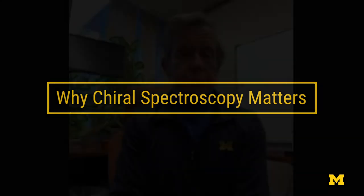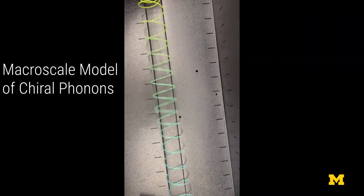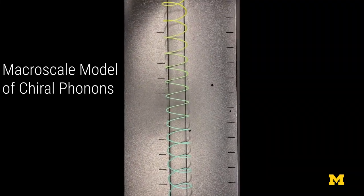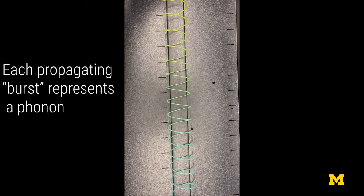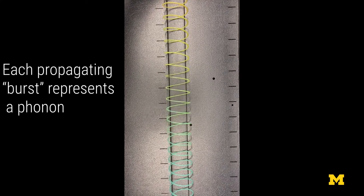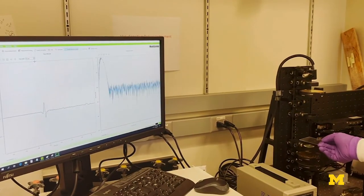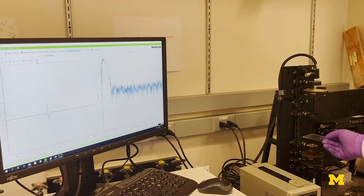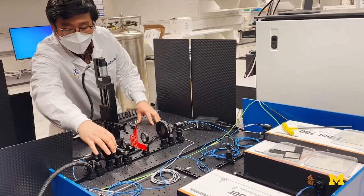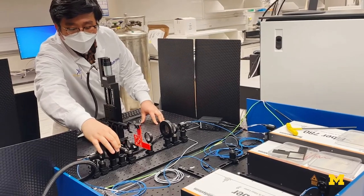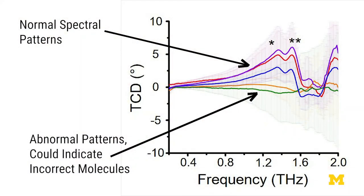With this type of spectroscopy and chiral phonons, you have a very sensitive way to establish what kind of chiralities your drugs, your peptides, your supplements are — what kind of chemical changes happen to them between the synthesis and maybe storage and transportation. And you have a very accurate readout in the spectra, in terms of terahertz circular dichroism spectra, to establish whether you have some alterations.